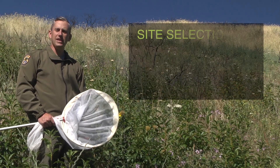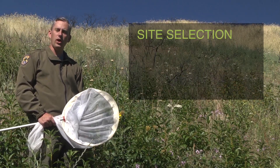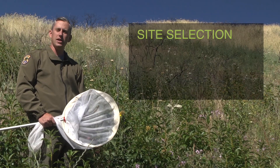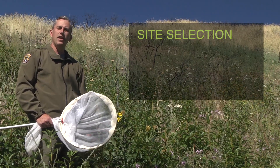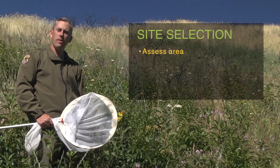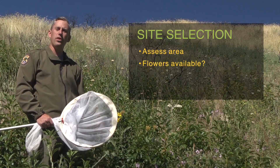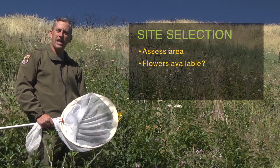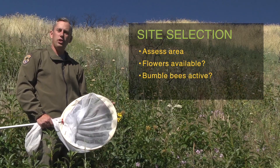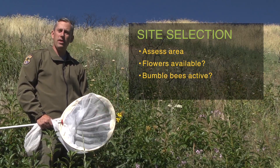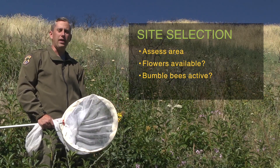We're here today to talk about site selection. Once you've chosen a location within your grid cell that you'd like to complete your survey, when you arrive on site you're going to assess the area to determine whether there are flowers available for bumblebees, whether there are bumblebees actively foraging in the area, and once you've determined that it's potentially suitable, you can conduct your survey.